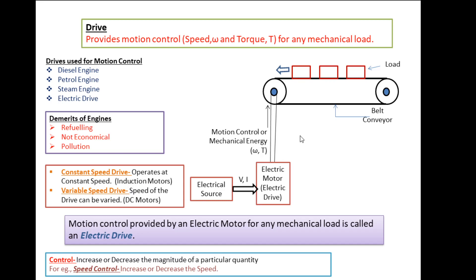Our objective is to control the speed of this belt conveyor because in real-time industrial applications there may be a requirement for speed change of the electric motor as required by the load. In our next video, we will discuss the applications of the electric motor, speed control, and why speed control is needed in a cement mill. Before that, let us see the basics of speed control of an electric drive system.